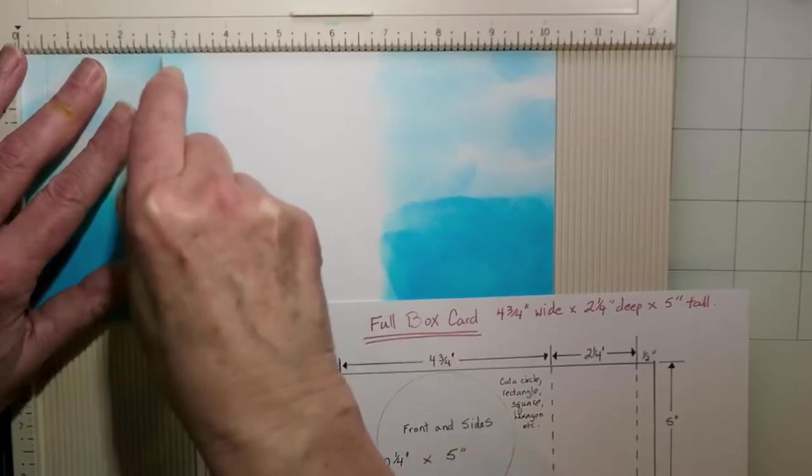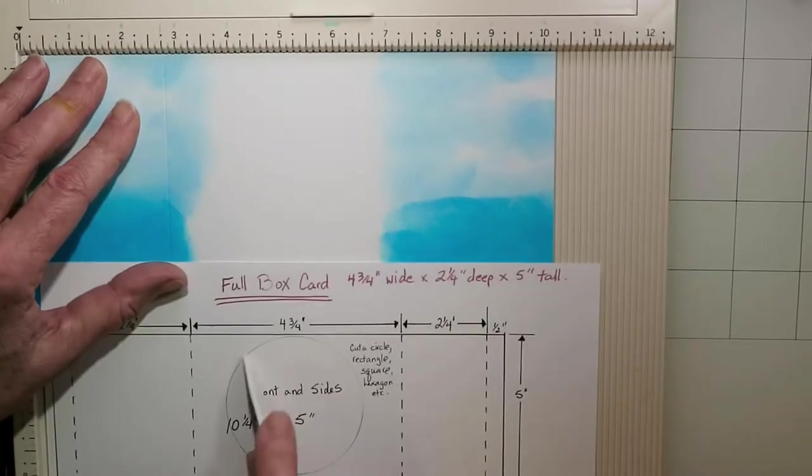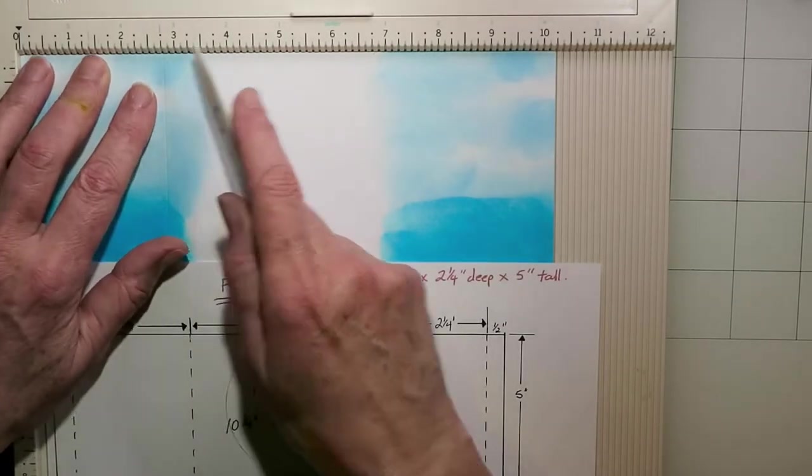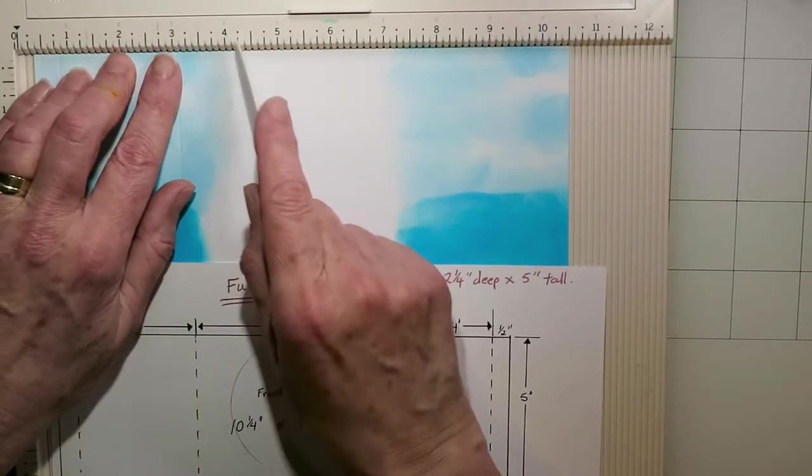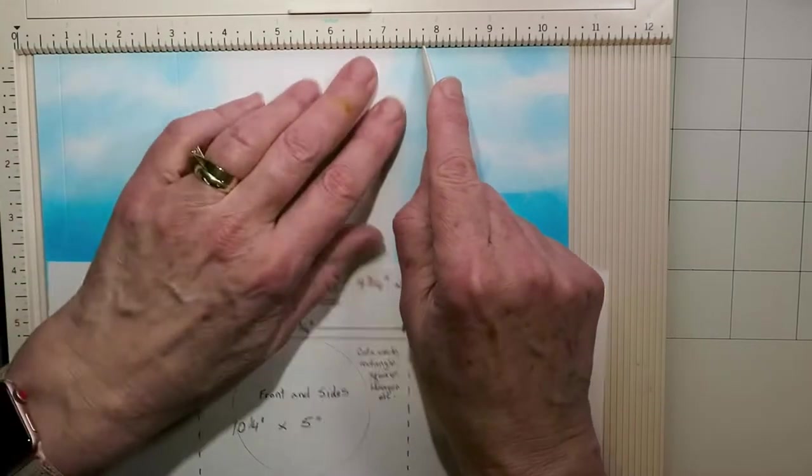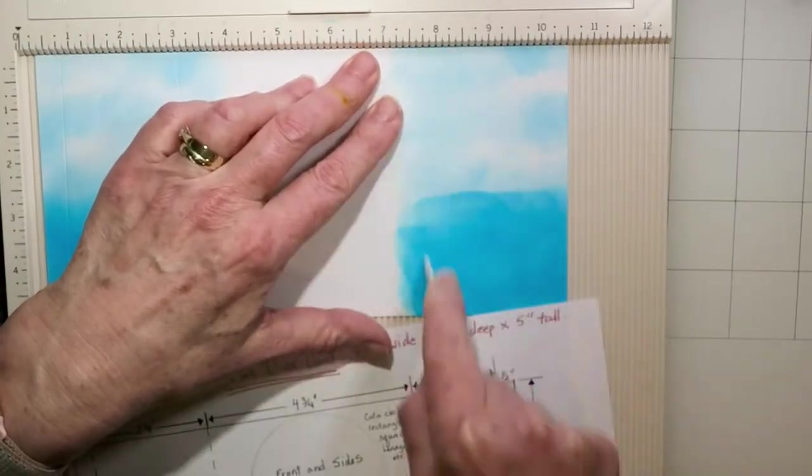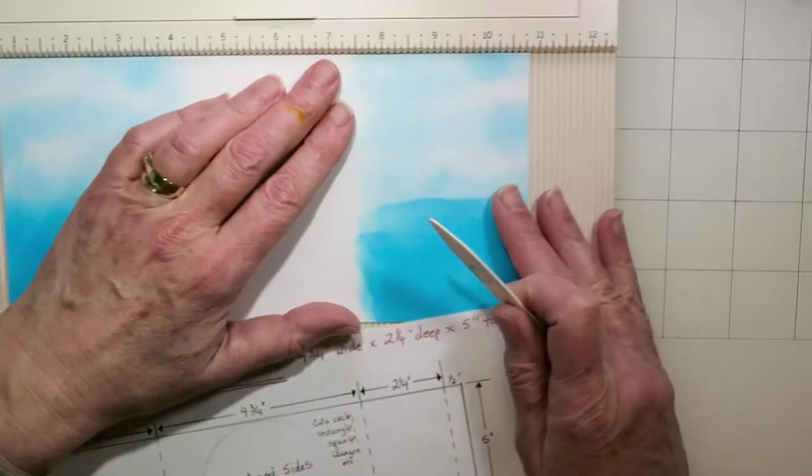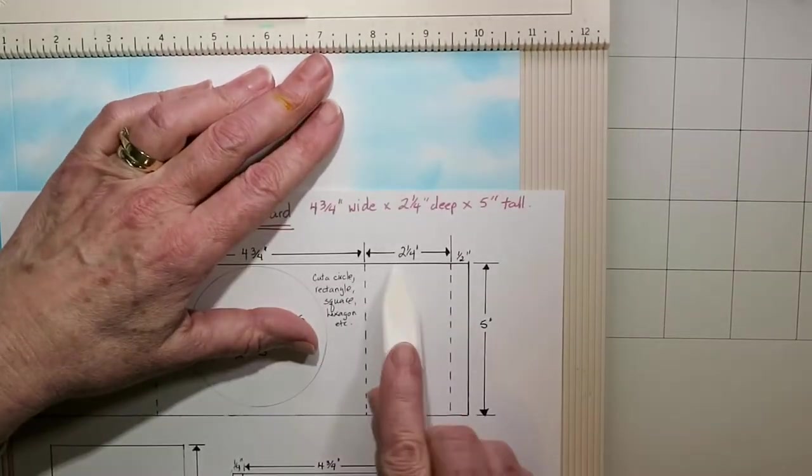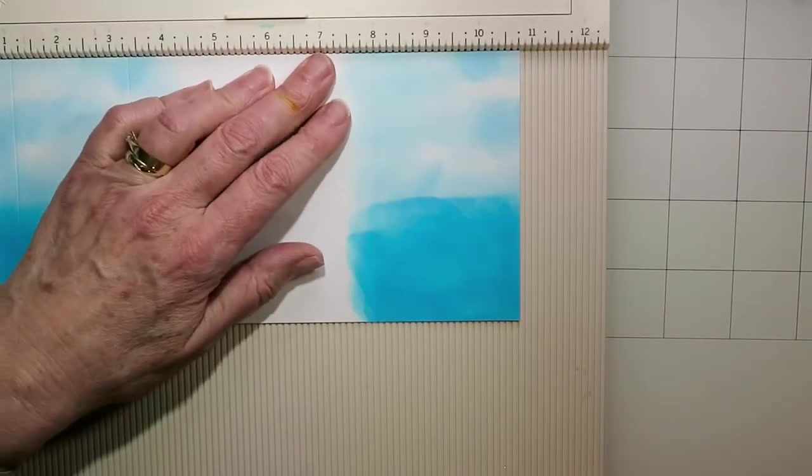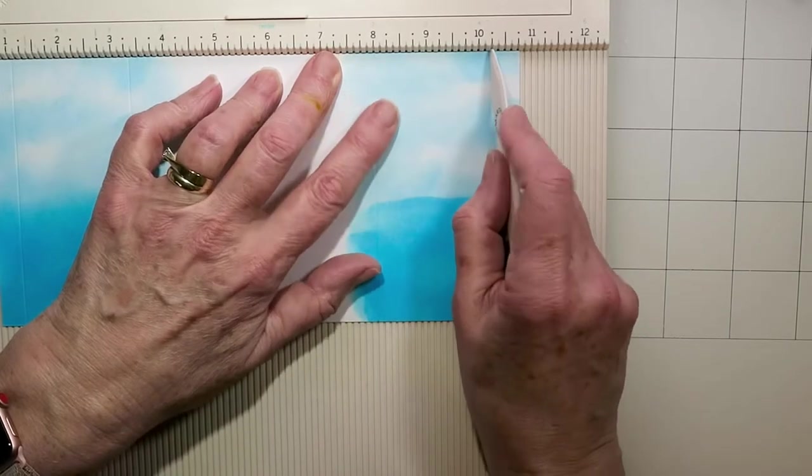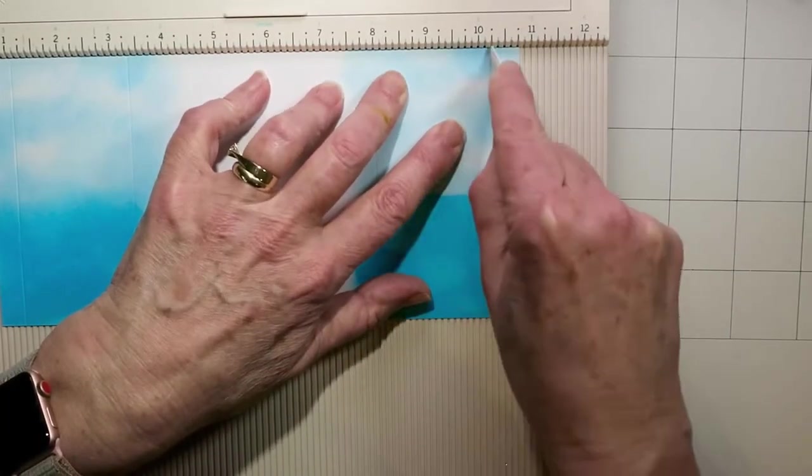But I am creasing at a half an inch in from each end, and then the side is two and a quarter inches, and then the front, if I go to a whole number, is four and three quarter inches wide. So that's all I'm doing there, and then all that's left now is that half inch at the end, and those are the creases.